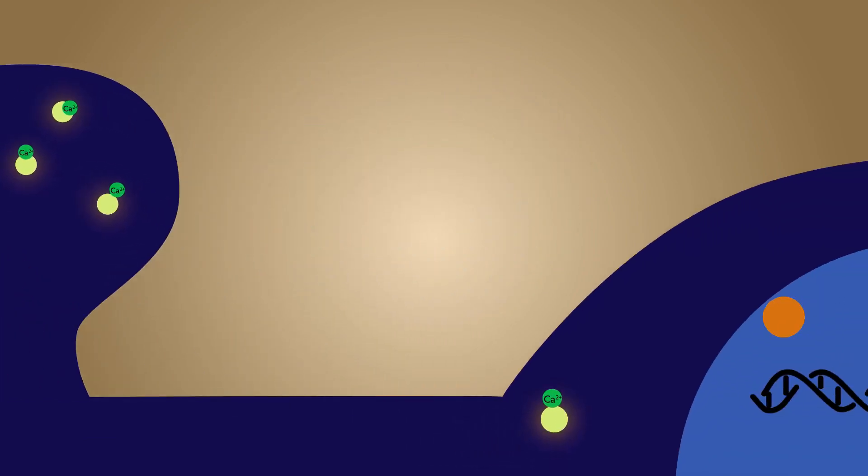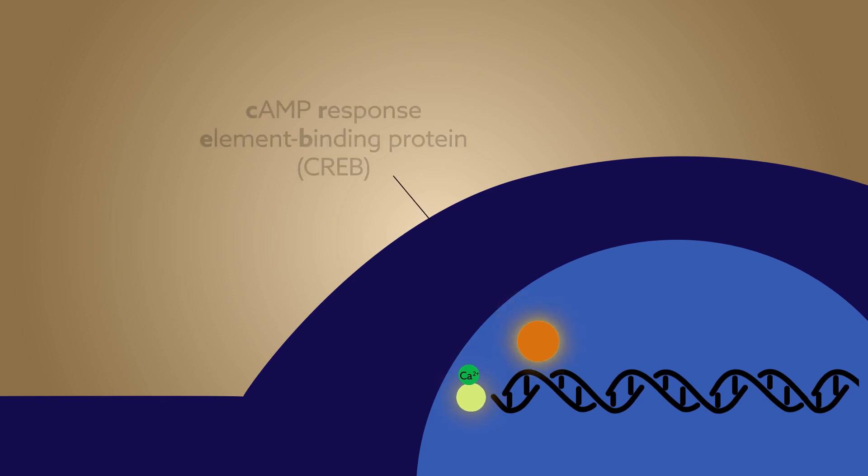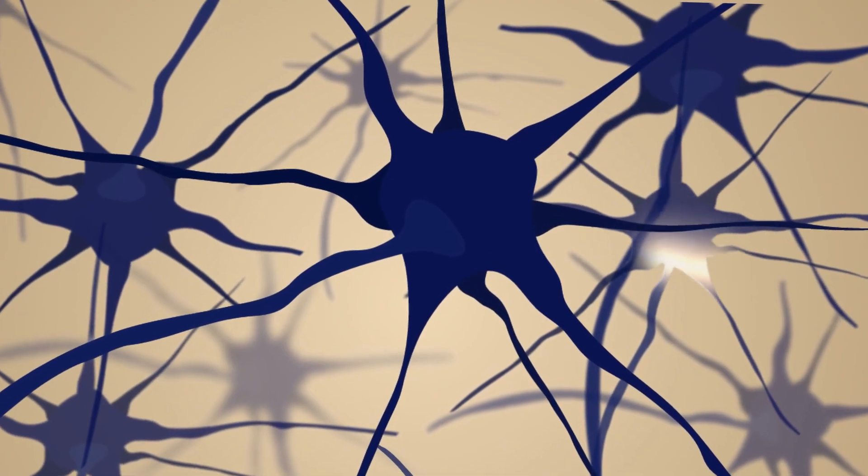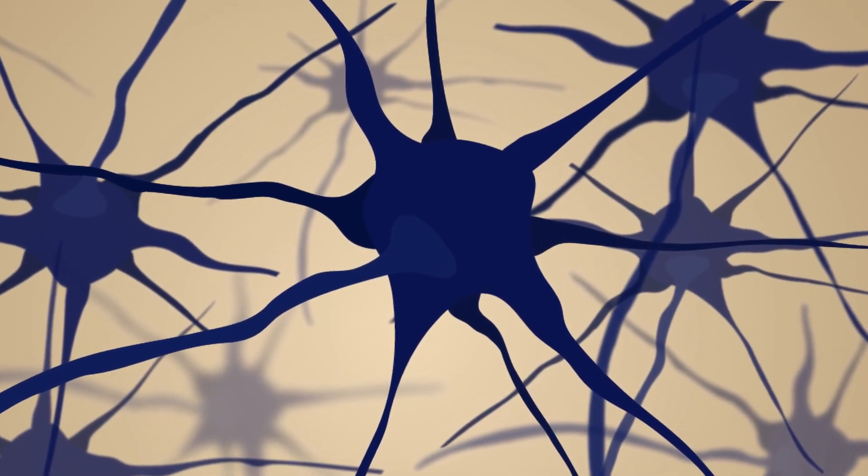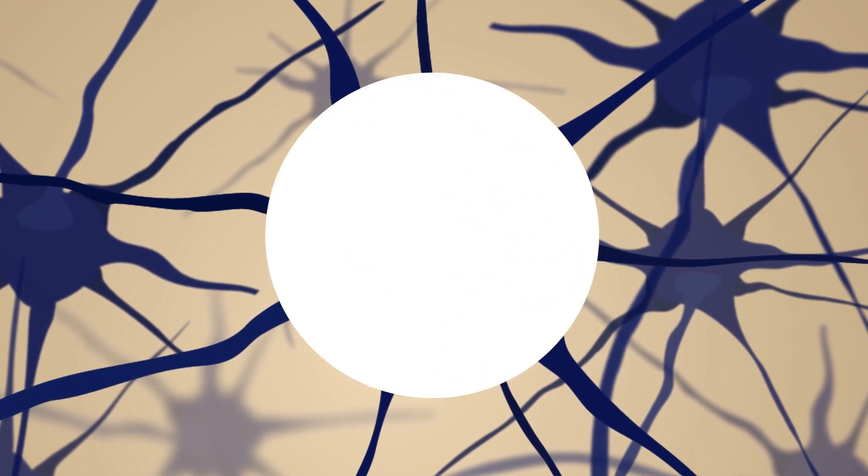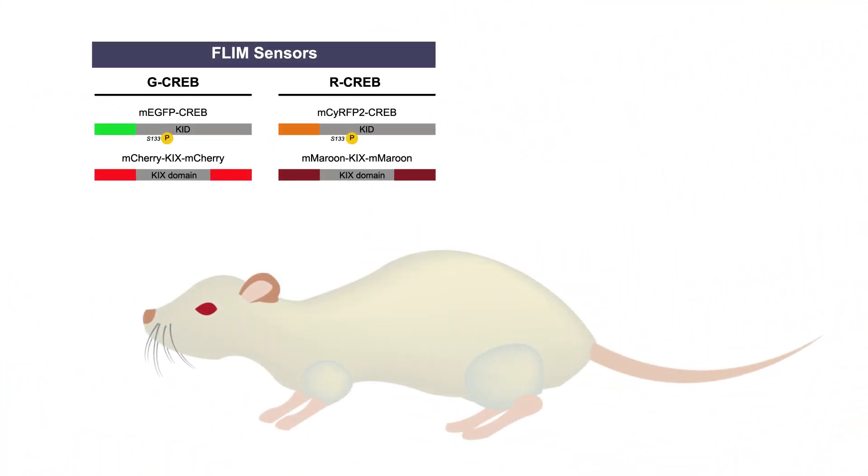Researchers reporting in Neuron have developed a biosensor capable of visualizing the activation of the transcription factor Cyclic AMP Response Element Binding Protein, or CREB. CREB is known to be important in mediating brain plasticity, but it had never been studied in concert with neuronal activity, certainly not at the level of a single cell. The team designed their biosensor to track CREB activity that occurs during plasticity.